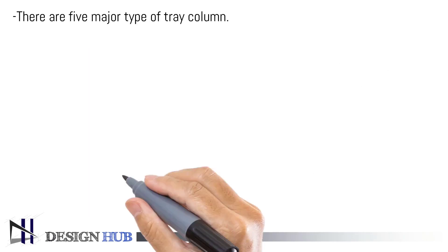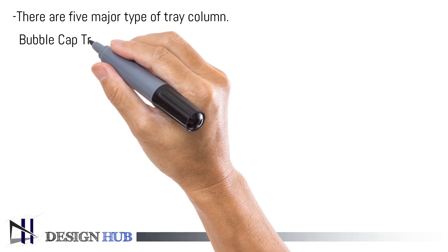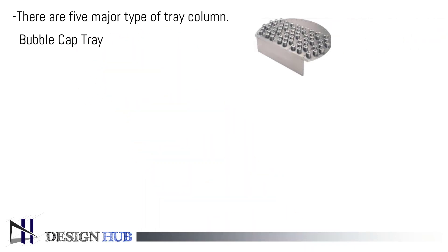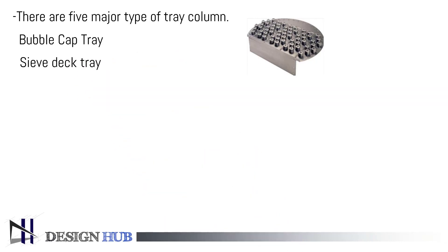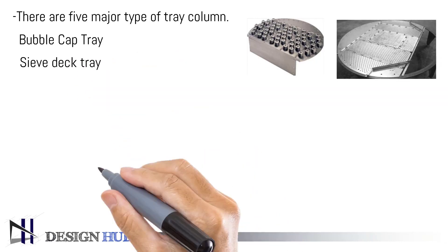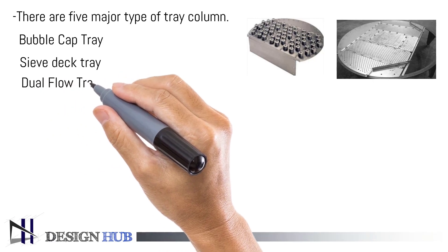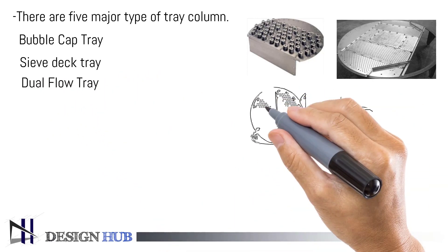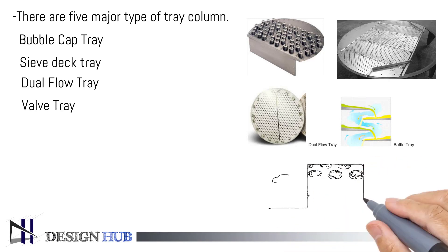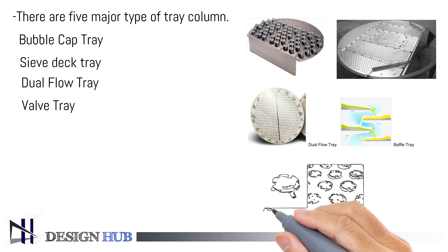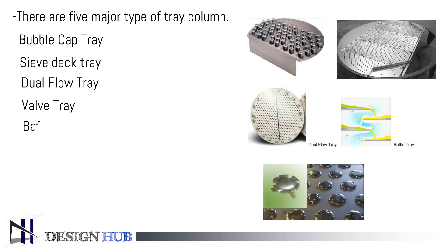Now, let us see the types of tray support. There are five major types of tray columns. First is the bubble cap tray. The second is the sieve deck tray. The third is the dual flow tray. Fourth is the valve tray. And the last one is the baffle tray.